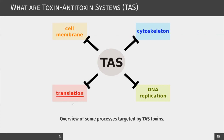TAS can target different biological processes, like different aspects of the translation mechanism, which is the most studied target. For example, MazF is a toxin that cleaves messenger RNAs in the ribosomal context or not. Some other toxins, like VapC, target tRNAs and ribosomal RNAs. Other TAS target DNA replication, the cell membrane, or the cytoskeleton. Targeting these key machineries leads to a metabolic shutdown or even cell death.